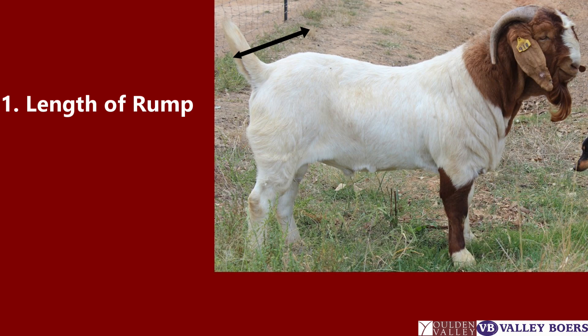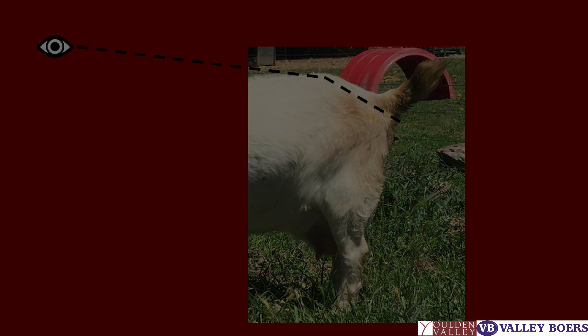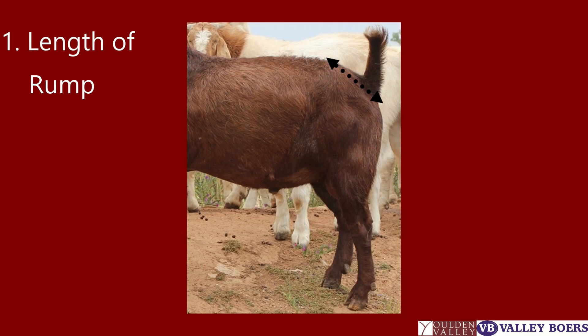The length and slope of the rump. Some tails sit differently, so it's important to look from the hip bone to the end of the animal. This animal's rump length and angle is sufficient. This animal has a steep rump and the length of rump could be longer.